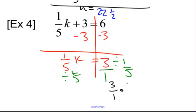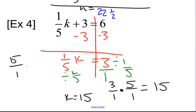And we are doing keep change reciprocal because it's division of a fraction. Keep change reciprocal. And then, 3 times 5 is 15. So k equals 15. And if we did 15 times 1 fifth, that ends up being 15 over 5, which is 3. And 3 equals 3. So we're good.